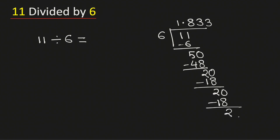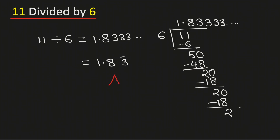We keep getting 2, therefore we will keep having 3, 3, 3 here. Therefore, 11 divided by 6 is equal to 1.8333 and so on. This can be rewritten as 1.83 bar, meaning 3 gets repeated. This is our final answer.